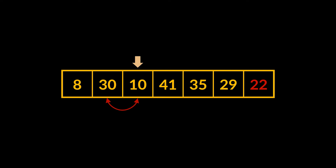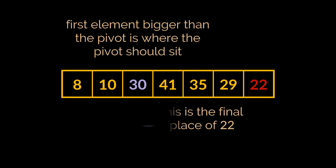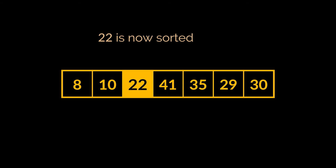We just created a category consisting of two elements smaller than 22. Therefore, the next element that is smaller than 22 should sit next to them, adding it to their category and leaving the remaining elements as the second category of items bigger than 22. In this example, all the remaining elements are actually bigger than 22, so these are already categorized. We now know there are two elements smaller than 22 and four elements bigger, so the first bigger element — 30 in our case — is where 22 should sit. Let's swap 30 with 22.